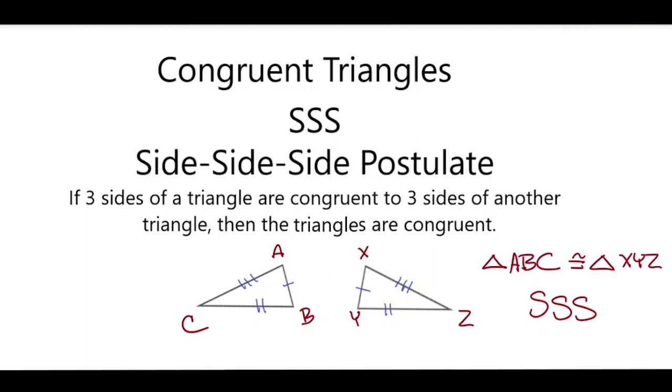So anytime you see a set of triangles where all the sides are marked as congruent to sides of another triangle, that means that those two triangles are congruent because of the side, side, side postulate.